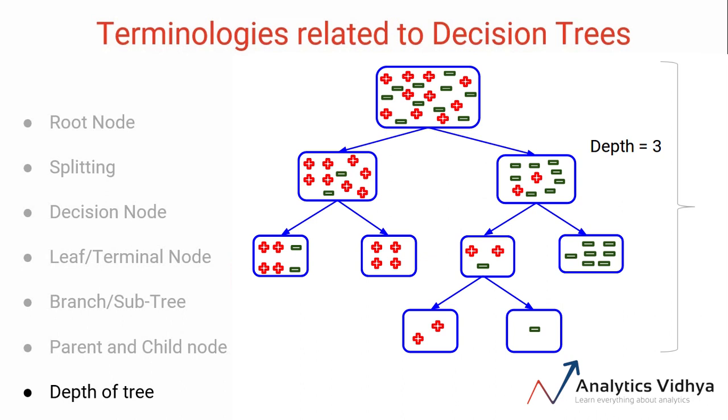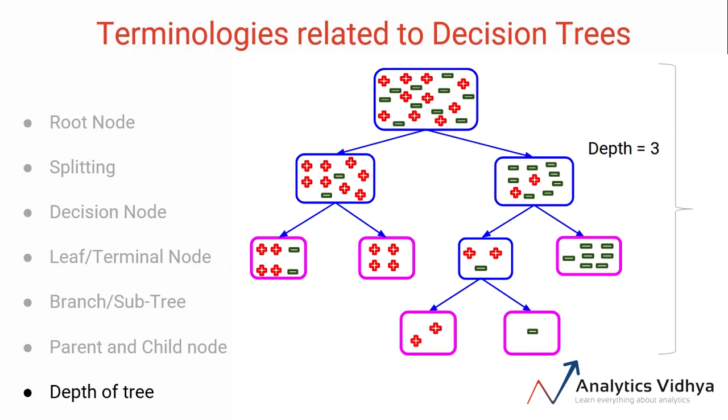Now I have a question for you. Can you tell how many leaf or terminal nodes there are in this tree? I encourage you to pause this video. Just remember, leaf nodes are the nodes which do not split further. And there are 1, 2, 3, 4, and 5 leaf nodes here which are not splitting any further. That's why we'll call them five leaf or terminal nodes in this tree.